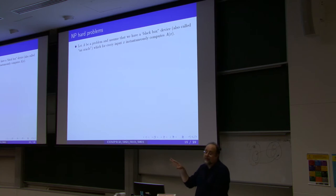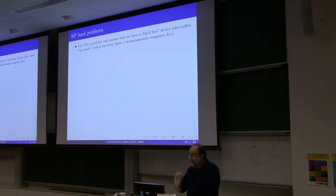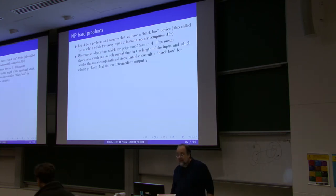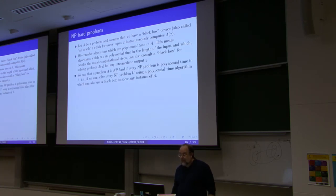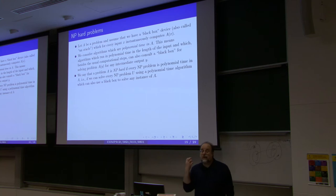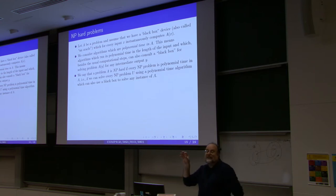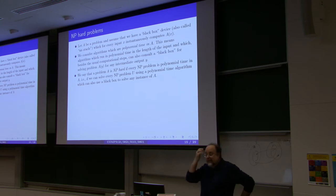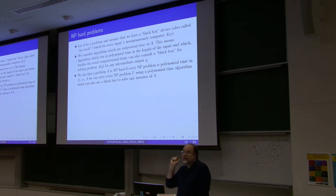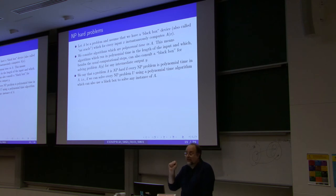NP-hard problems are not necessarily problems that you can solve if you had the right guess, and in fact they don't even have to be a decision problem at all — they can be optimization problems. But they are problems such that if you could have some magical device, some magic coprocessor that solves that problem, then you can solve all NP problems in polynomial time using this oracle device.